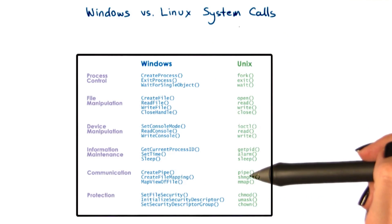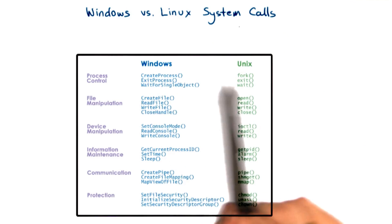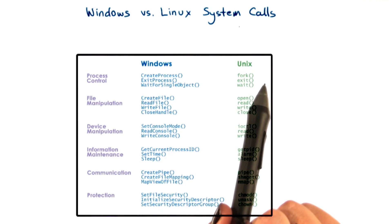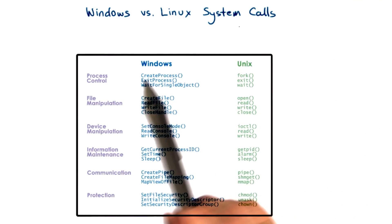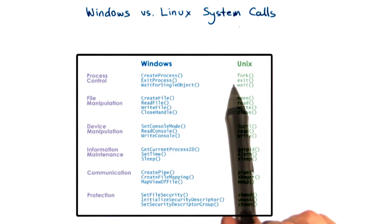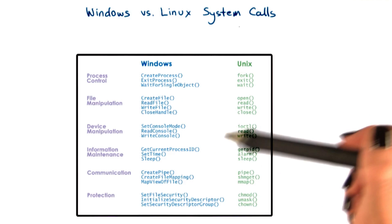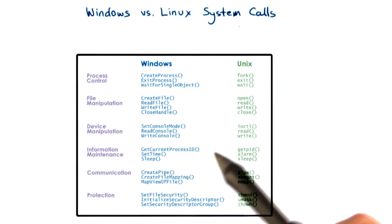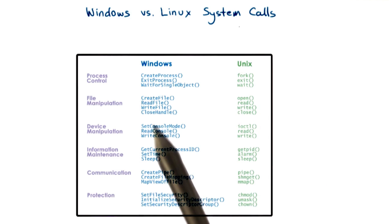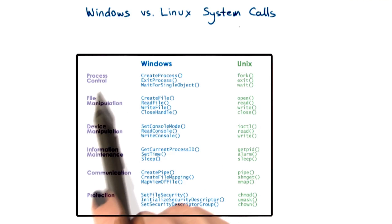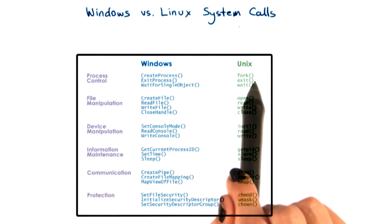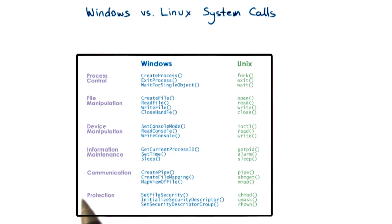Here are some system calls in two popular operating systems, Windows and Unix. Notice that although these are two very different operating systems, the types of system calls and the abstractions around those system calls these two OSes provide are very similar — process control, creating a process, exiting a process, waiting for objects, creating files, etc.